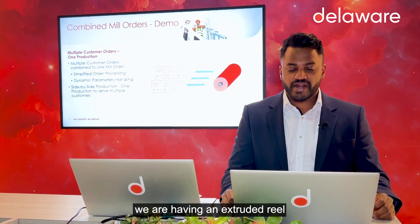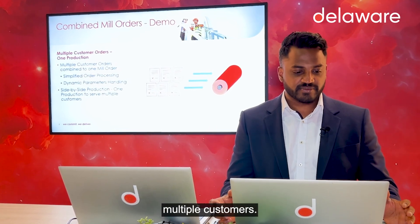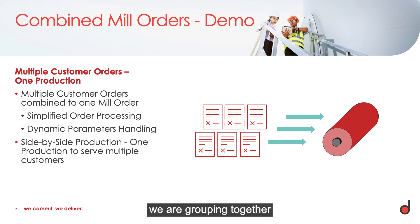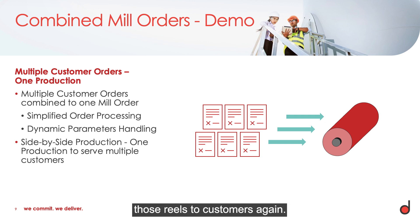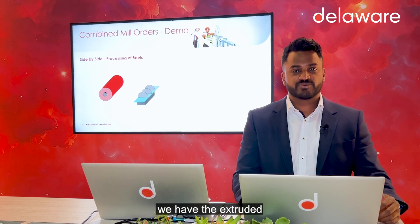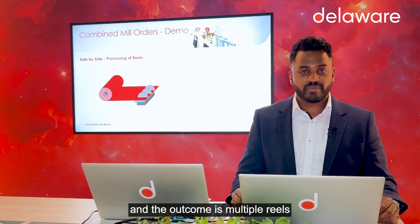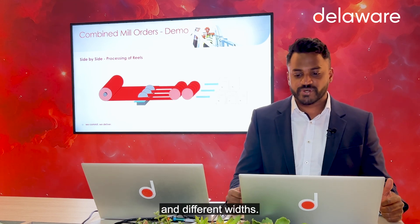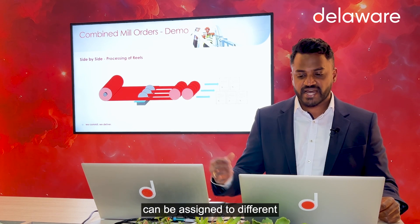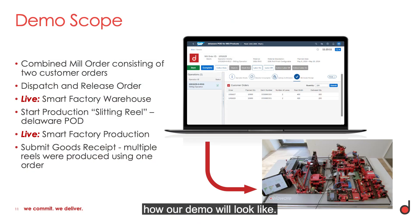In our demo we have an extruded reel which is slitted to serve multiple customers. We are grouping together multiple customers with similar requirements, doing the slitting process, and then assigning those reels to the customers. The extruded reel is on the left side, and the outcome of the slitting process is multiple reels with different lengths and different widths, which can then be assigned to different customer orders.